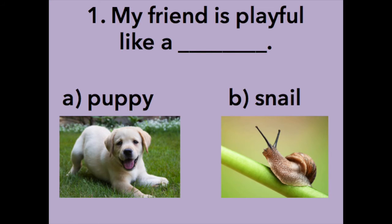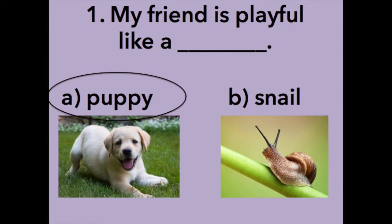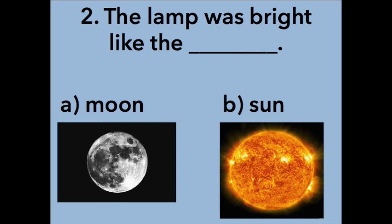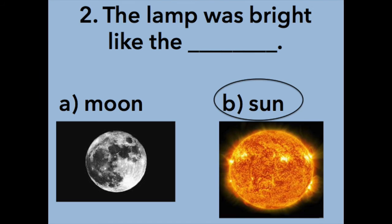Now try the next few on your own. Pick the choice that makes the most sense in the blank. My friend is playful like a puppy or a snail. Puppy is correct. The lamb was bright like the moon or the sun. The sun is correct.